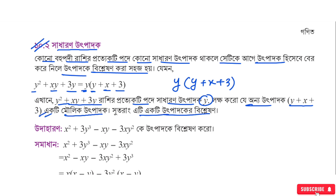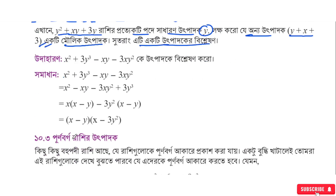Now we look at another type of factorization. Here the expression is x² + 3y³ - xy - 3xy. We have x² plus 3y³ minus xy minus 3xy here.